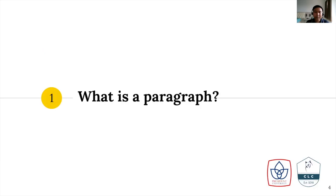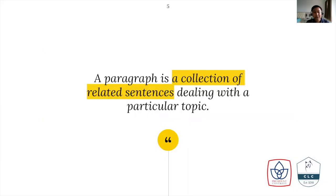First of all, what is a paragraph? Well, to put it simply, a paragraph is a collection of related sentences dealing with a particular topic. I want you to pay attention to the highlighted words here: a collection of related sentences. So the information should be organized, and it should be related or connected with one another as well. That's why we need to understand how to write an effective and great paragraph.